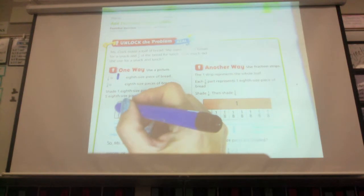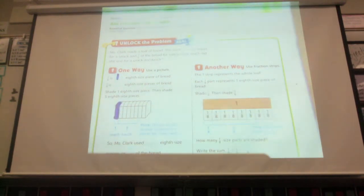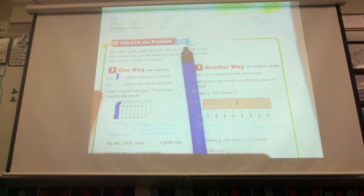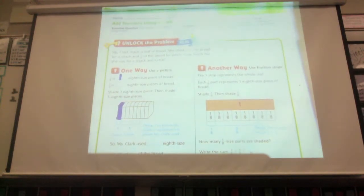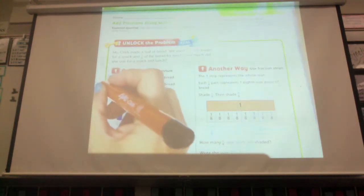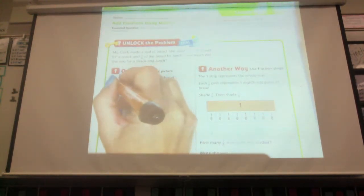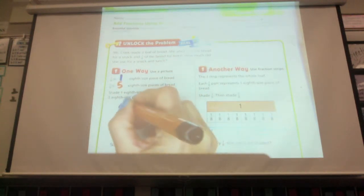And if you were to shade it on your model here, you would show this is the snack, right? There you go. Go ahead and shade yours. Okay, the next one says five-eighths, and they're eighth-size pieces. How many is that? How many eighth-size pieces do we have? Only a couple of you are awake over here. Five eighth-size pieces. So I'm going to color five of those.